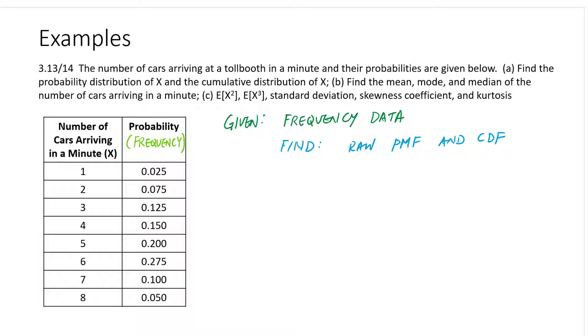That's part A. We'll just focus on parts A and B for now. Part B is we want to find the mean, which is the expected value of X. We want to find the mode and the median.